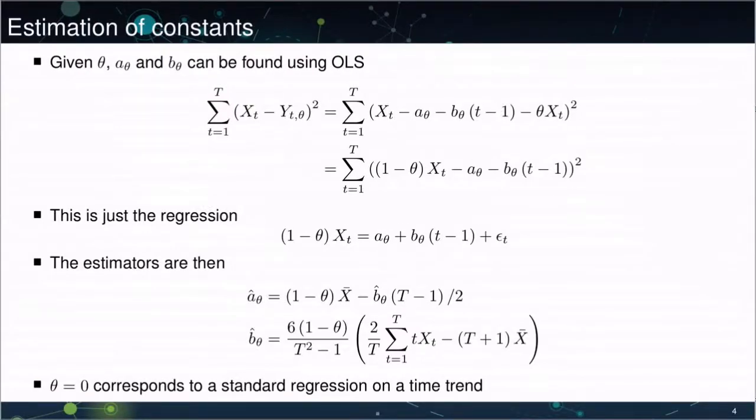In order to estimate these two parameters of the model, the alpha and the beta, the suggestion is to use OLS. So what we want to do is fit a theta line to match as closely as possible to the original series. We're going to use least squares between the observed value Xt, which again could be logged or levels, and the theta line.